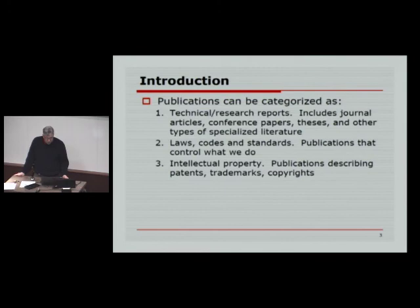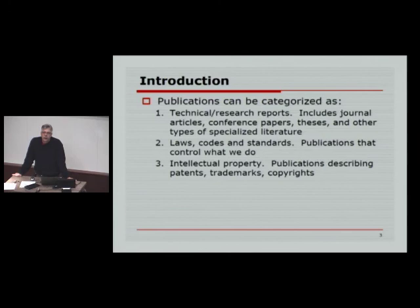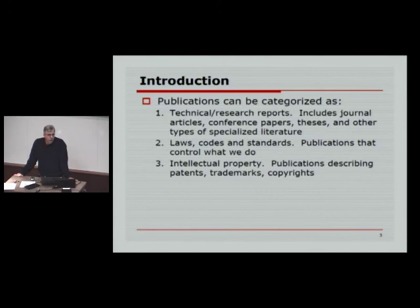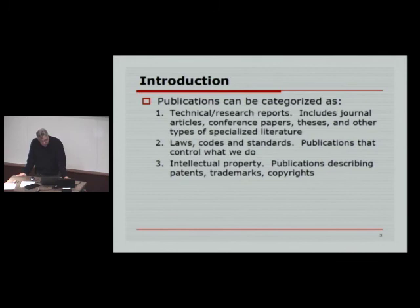When we look at technical literature and technical publications, we break them into different categories, principally because they have different levels of credibility. The first major category is technical and research reports — publications typically produced by individuals working at universities or governmental agencies. Those publications are typically reviewed by peers prior to publication. In some cases, it's a very strenuous review process, and those are worth a lot more than other bits of information you may find on the web.